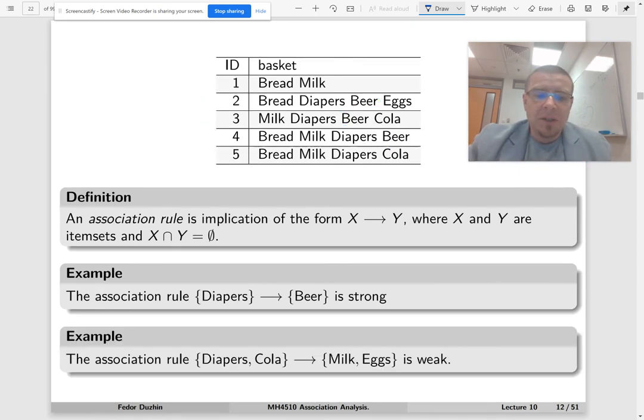But if you look at this association rule, diapers and cola imply milk and eggs. This is a weak association rule because diapers and cola do appear together only once. But in this transaction, milk and eggs do not appear.